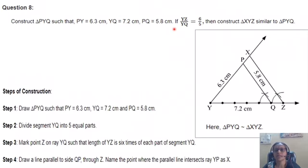All 3 sides are given. YZ upon YQ is 6 by 5. Then construct triangle XYZ similar to triangle PyQ.